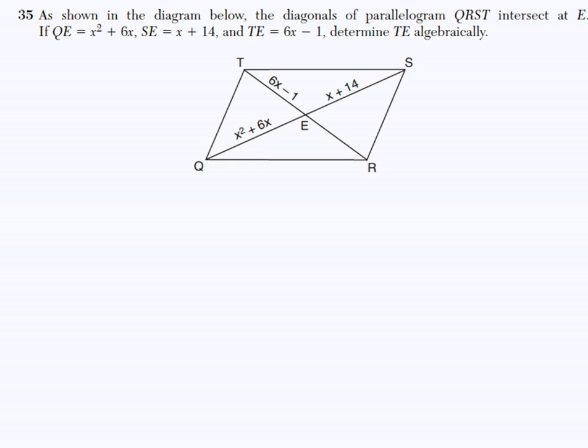Hi, this is Mr. Estrada. In this video, we are going to go over number 35 from the August 2012 Geometry Regents. As shown in the diagram below, the diagonals of parallelogram QRST intersect at E. If QE equals X squared plus 6X, SE equals X plus 14, and TE equals 6X minus 1, determine TE algebraically.